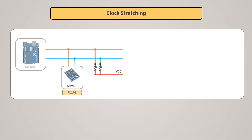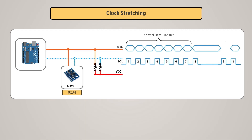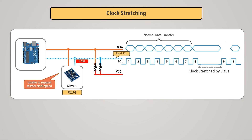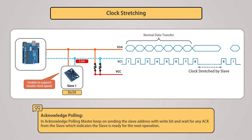In I2C communication, the master device determines the clock speed. However, there are situations where an I2C slave is not able to cooperate with the clock speed given by the master and needs to slow down — this is done by a mechanism called clock stretching. An I2C slave is allowed to hold down the clock to reduce the bus speed, forcing the master into a wait state. When the slave is ready for the next byte, it releases the SCL line and the master resumes the transaction.